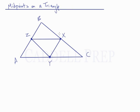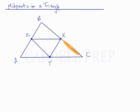Let's go over what these midpoints do. When we draw point X on line segment BC, we end up with a new line segment BX and a line segment XC. Both of those are congruent to each other, so we have BX and XC are congruent.